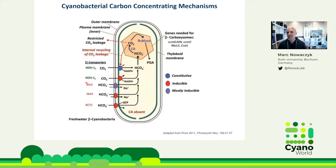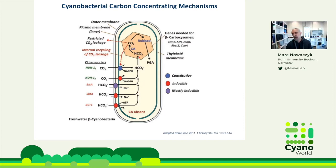There are also alternative versions of Complex I in cyanobacteria that are involved in carbon concentrating mechanisms. Several transporters in the cytoplasmic membrane transfer bicarbonate into the cell to enrich the internal bicarbonate concentration. The bicarbonate then diffuses to the carboxysomes, where a carbonic anhydrase converts it back into CO2, because this is a substrate for RuBisCO. There is also some leakage of CO2 from the carboxysomes, and this is recaptured by an alternative version of Complex I.